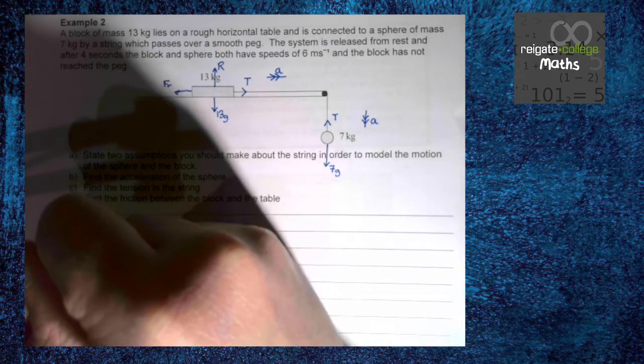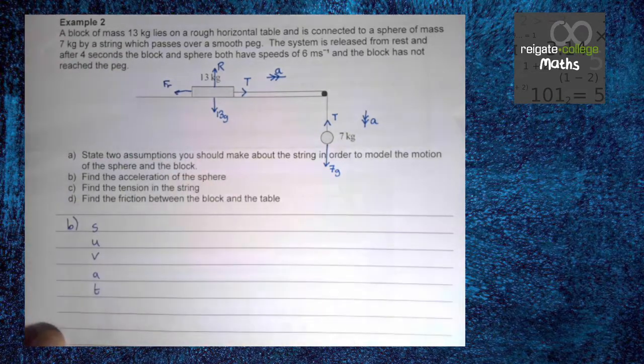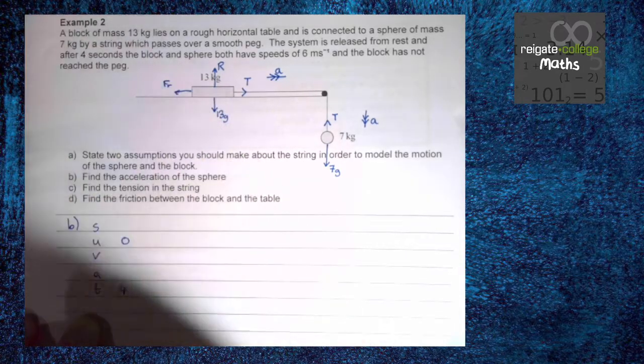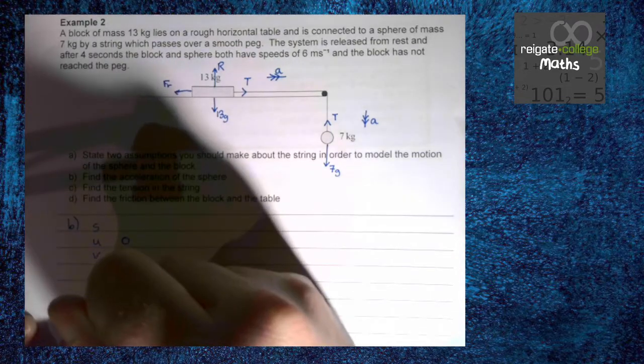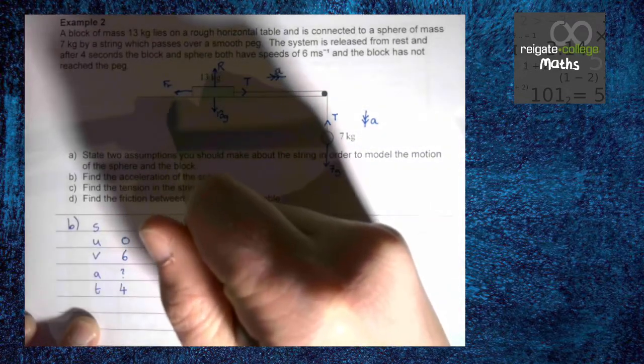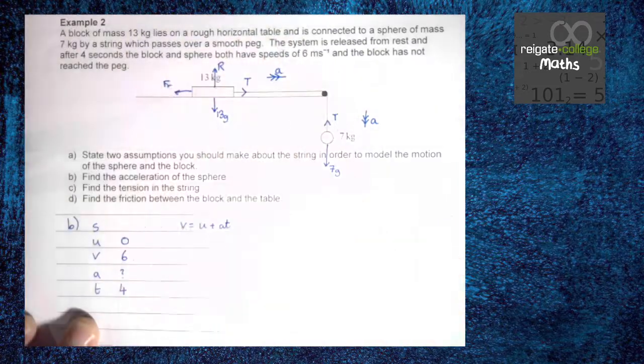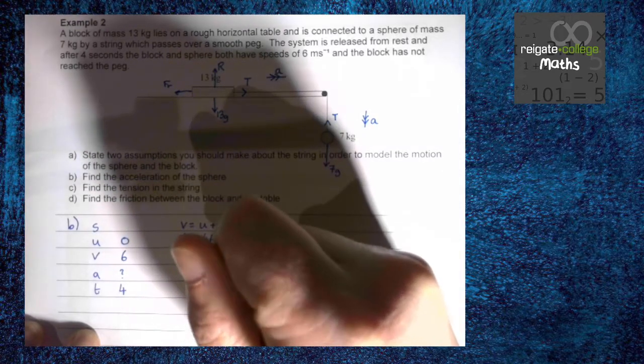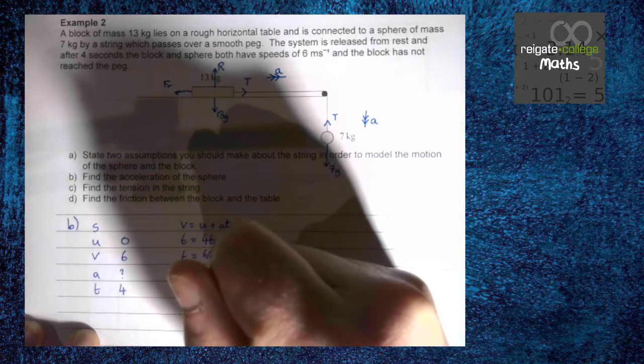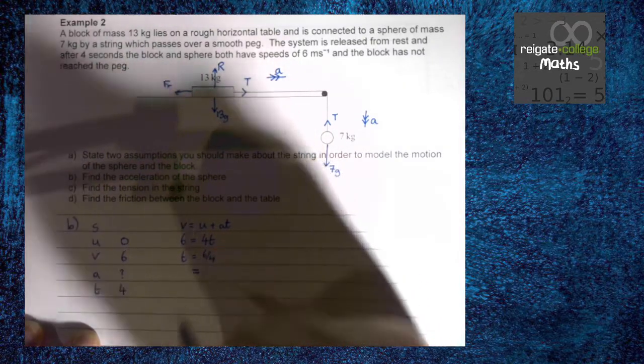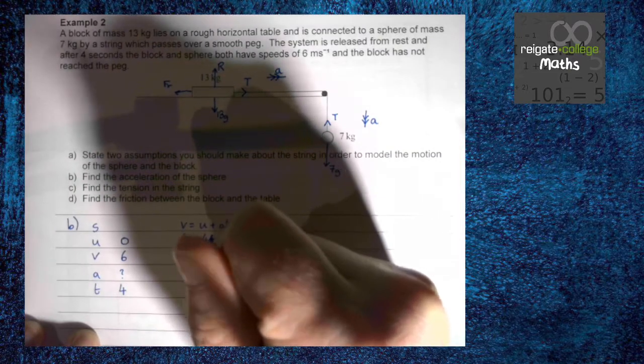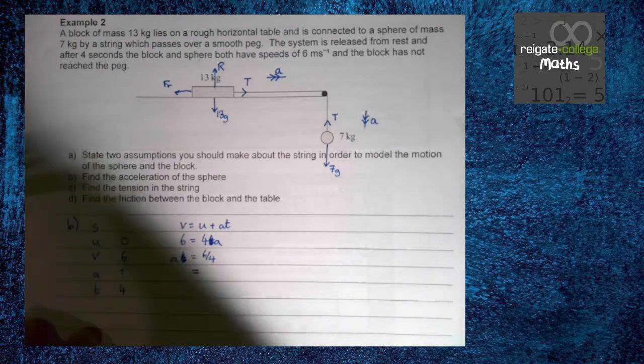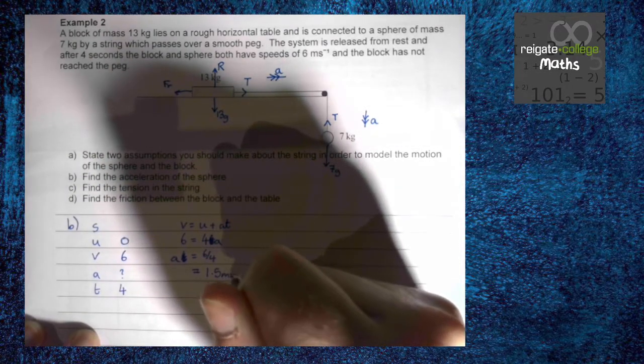So, for part B, we have our SUVAT. So, we know it has moved for four seconds. It started at rest. And it now has a speed of six. And we're trying to find the acceleration. We use the SUVAT equation that doesn't have S in. So, we know it accelerates at a rate of 6 over 4, which is 1.5 meters per second squared.